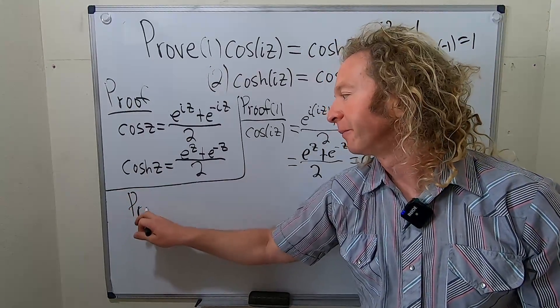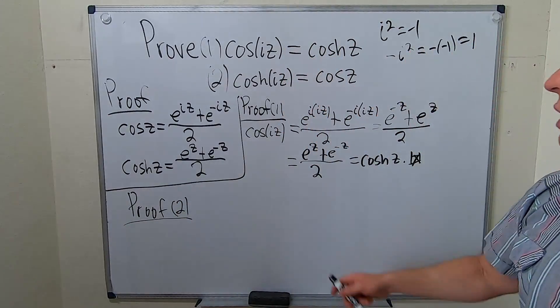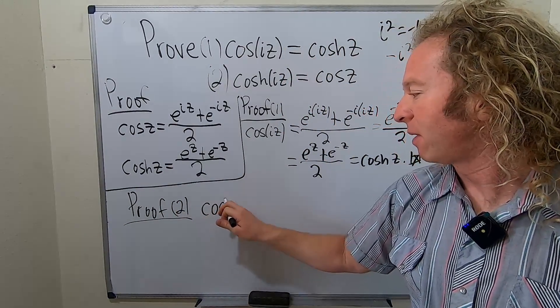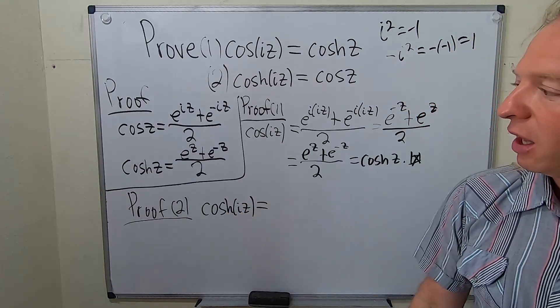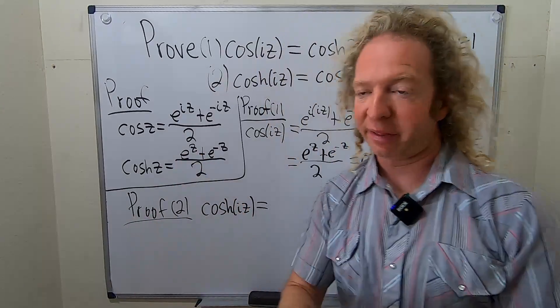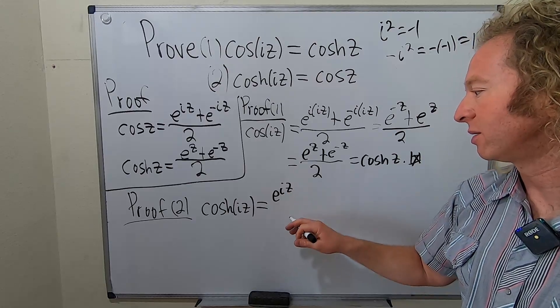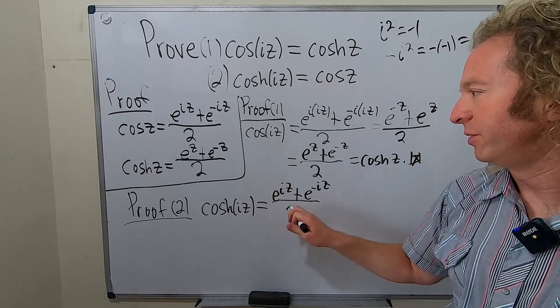Let's do the second one. Proof of 2. Let's do it. So this one, we'll start with this and we'll show it's equal to this. So we have the hyperbolic cosine of iz. So cosh iz. And so in this case, we simply have to replace z with iz. So this is going to be e to the iz. This is so awesome. Plus e to the negative iz. Over 2.